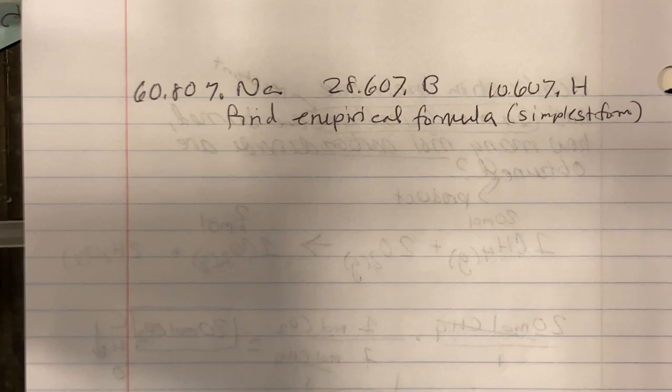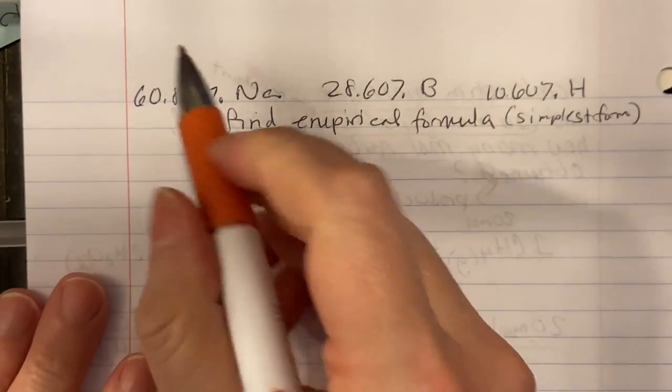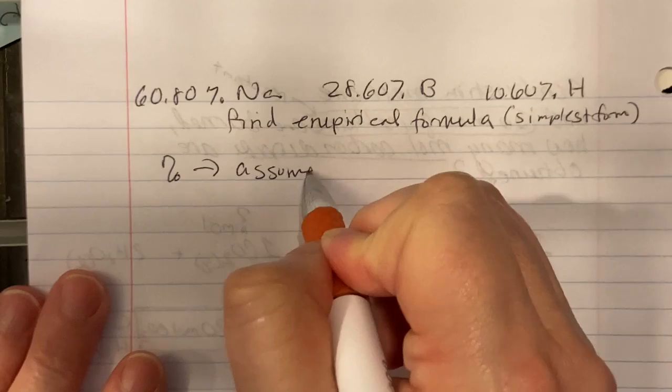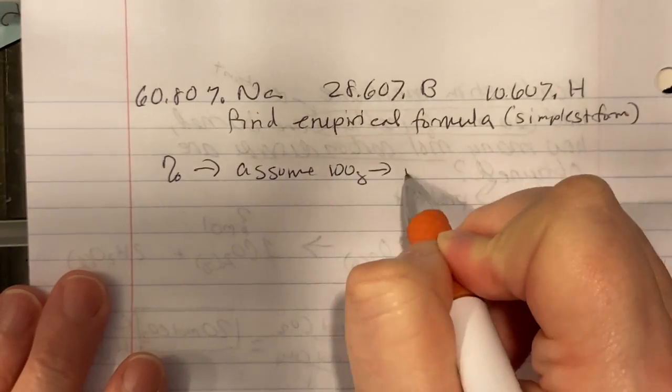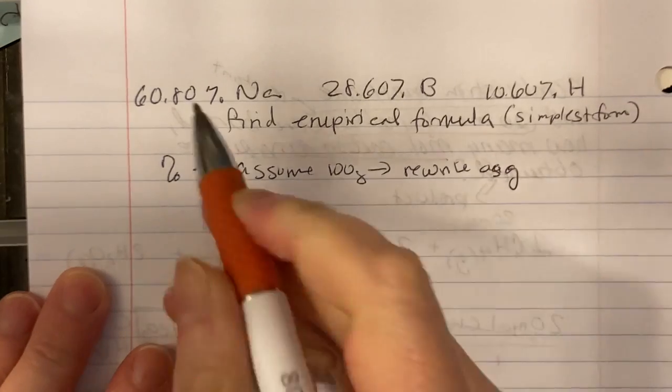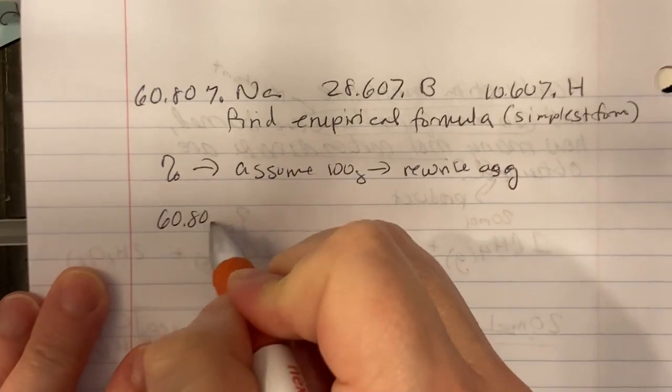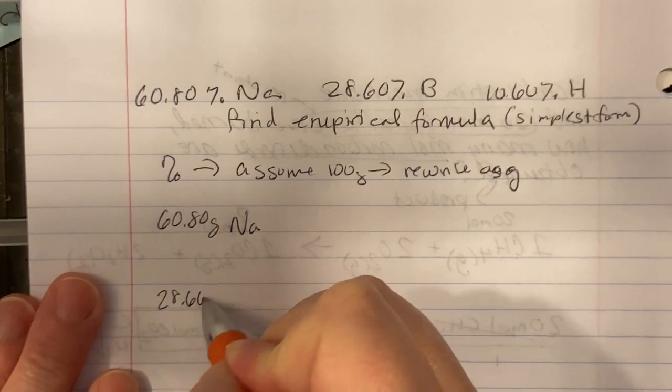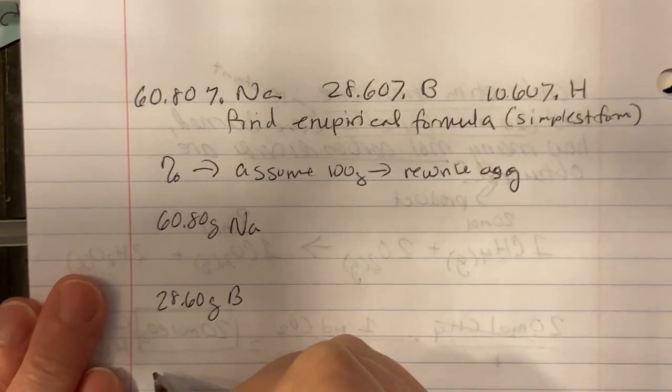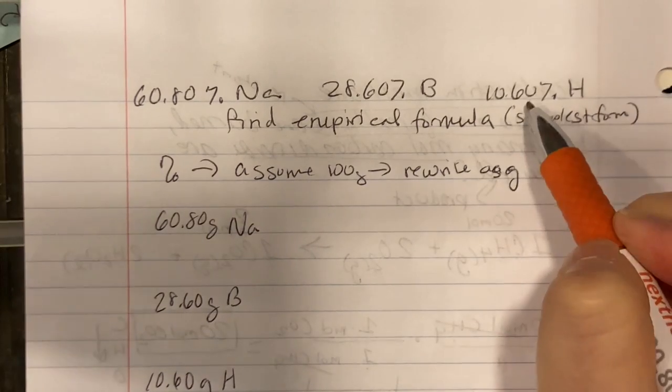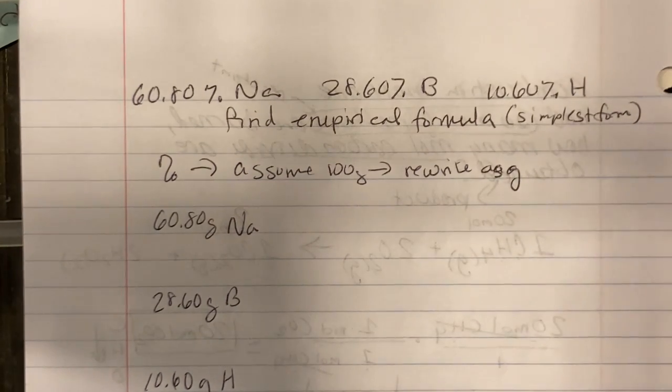Okay, so the first thing we do when you're given percentages, then just assume 100 grams and rewrite as grams. So this would be 60.80 grams of sodium, 28.60 grams of boron, 10.60 grams of hydrogen. So we just took the percentage off and changed it to grams.